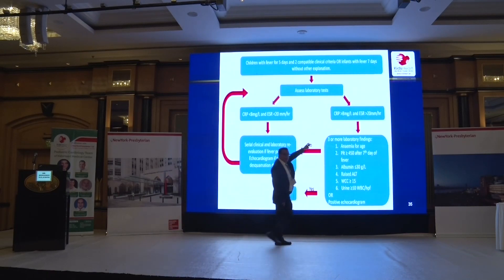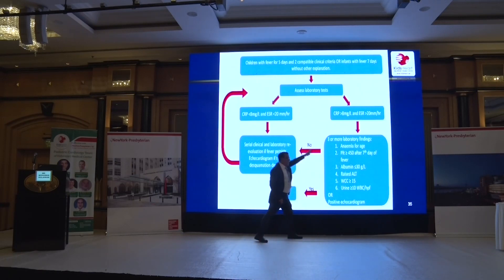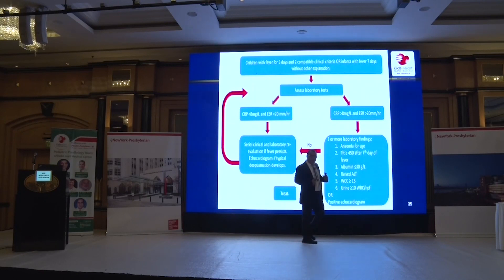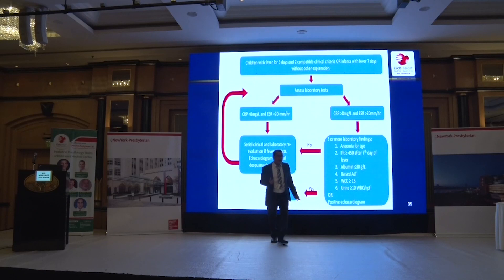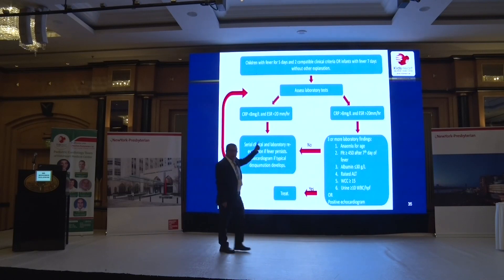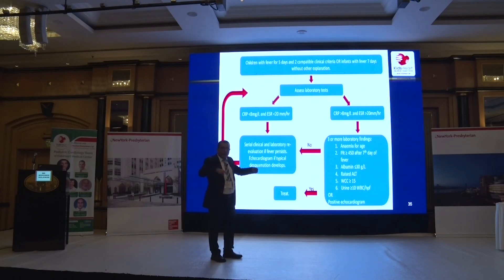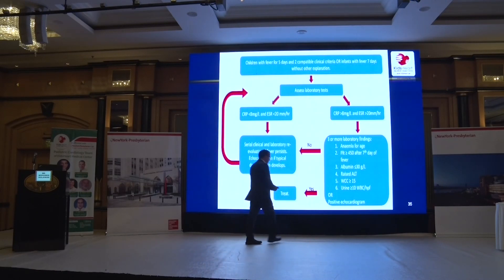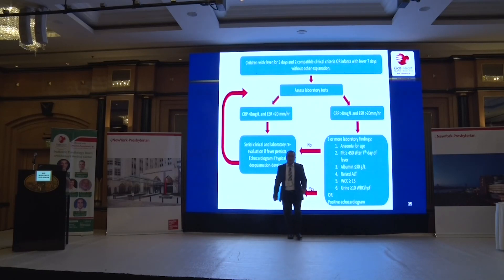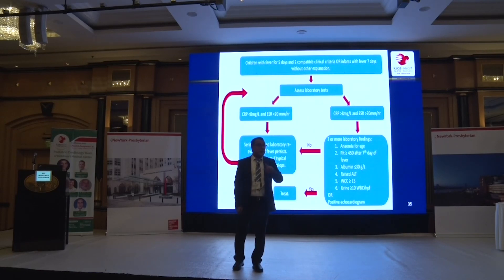For incomplete Kawasaki, follow two steps. First, do inflammatory markers: ESR and CRP — do both. If normal, follow up the next day and repeat labs. If abnormal, proceed to additional workup: more inflammatory markers, liver enzymes, CBC, and urinalysis — dig for the problem. If that secondary workup is abnormal, or if you suspect incomplete Kawasaki, call me for an echocardiogram. We've updated our guidance: call for echo even while the patient is still admitted, especially for incomplete Kawasaki.